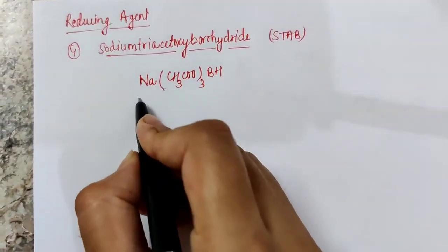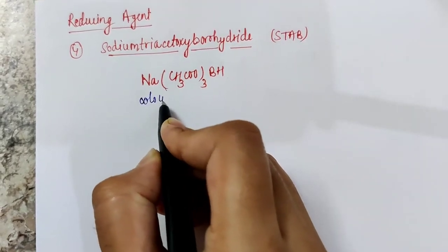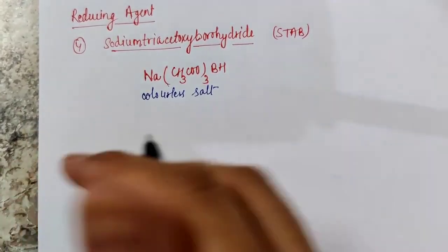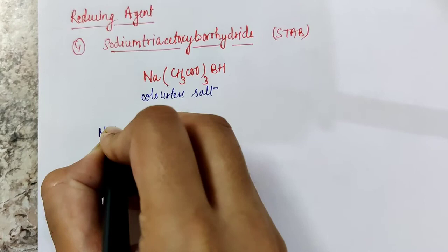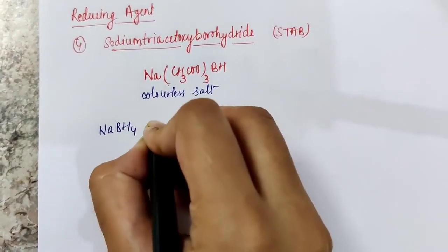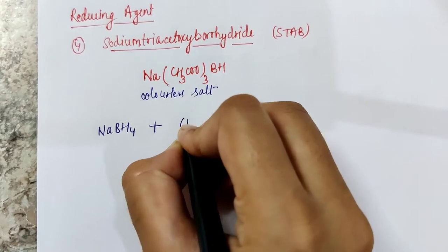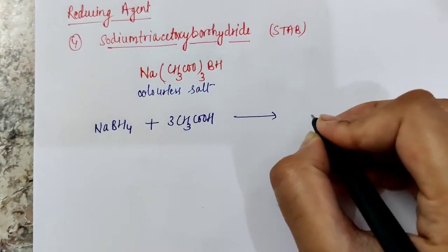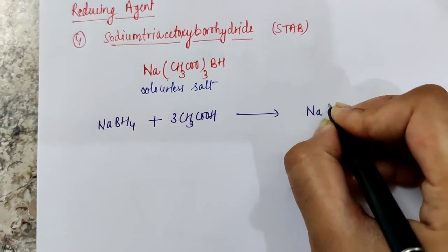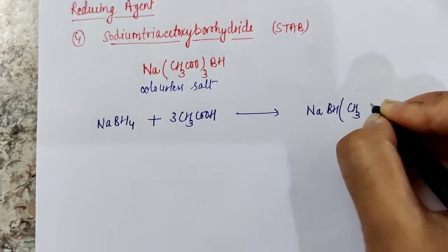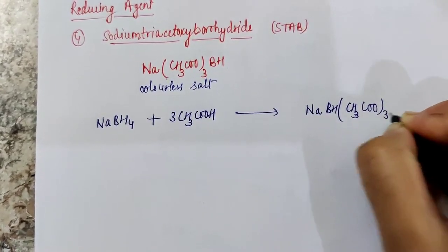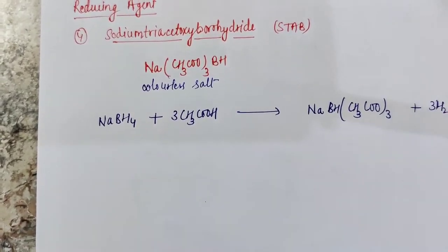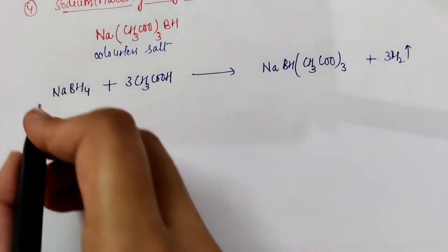It is a colorless salt and it is prepared by protonolysis of sodium borohydride. Basically sodium borohydride is reacted with acetic acid and it undergoes protonolysis and we obtain sodium triacetoxy borohydride and three molecules of hydrogen gas are evolved. It is a milder reducing agent.